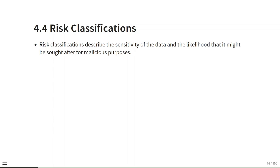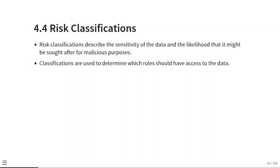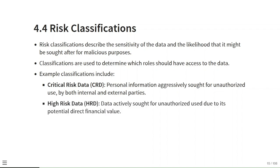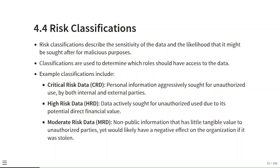Risk classifications describe the sensitivity of data and the likelihood it might be sought for malicious purposes. They determine which roles should have access to data. Example classifications include: Critical Risk Data (CRD) — personal information aggressively sought for unauthorized use; High Risk Data (HRD) — data sought for unauthorized use due to direct financial value; and Moderate Risk Data (MRD) — non-public information with little tangible value to unauthorized parties, yet likely to negatively affect the organization if stolen.